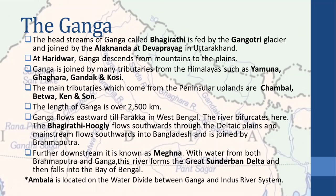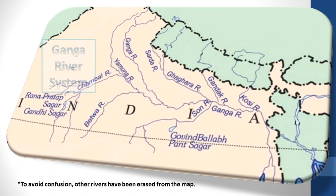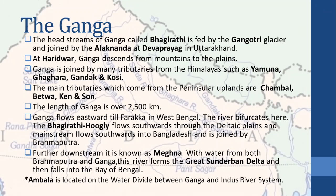The headstream of Ganga, called Bhagirathi, is fed by the Gangotri glacier and is joined by the Alaknanda at Dev Prayag in Uttarakhand. At Haridwar, the Ganga descends from the mountains to the plains.